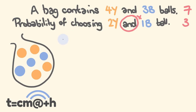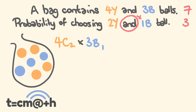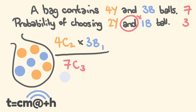So how many different ways can we choose two yellow balls from four? We're going to be multiplying that by how many different ways from three balls can we choose one of them. And this is all going to go over the total number of combinations for choosing three balls out of seven — that's 7C3.